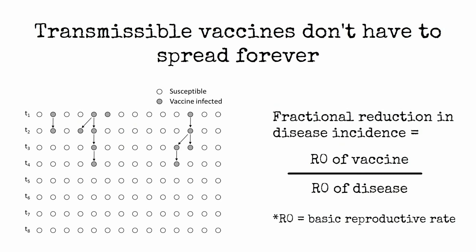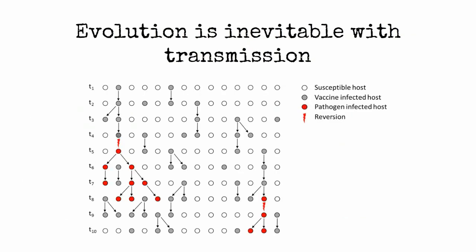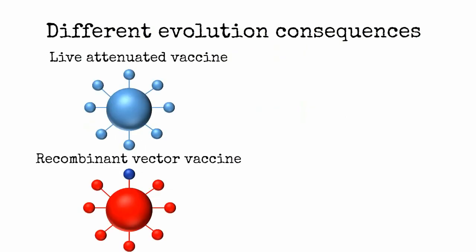The fact that a vaccine can grow within a host or a host population means that the vaccine can evolve. Although evolution is virtually inevitable for both live attenuated vaccines and recombinant vector vaccines, its consequences differ.